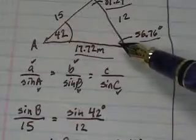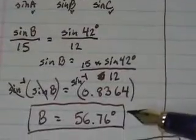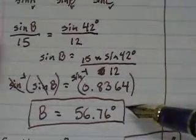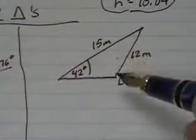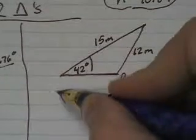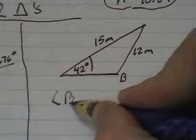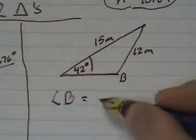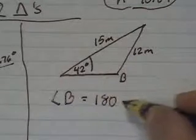In this triangle, it is your answer. But this same reference angle is the solution here. So how do you find angle B? Well, angle B is going to be 180 minus 56.76.